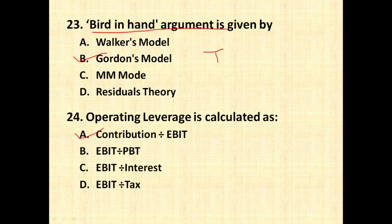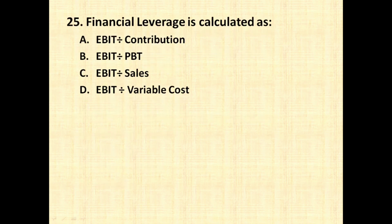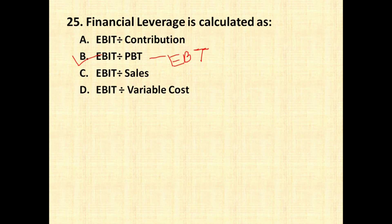Operating leverage is calculated as contribution divided by EBIT, which helps measure the relationship between sales and EBIT. The last question for today is: financial leverage is calculated as EBIT divided by PBT, which is also called EBT — earnings before tax. So operating leverage = Contribution / EBIT, and financial leverage = EBIT / EBT.